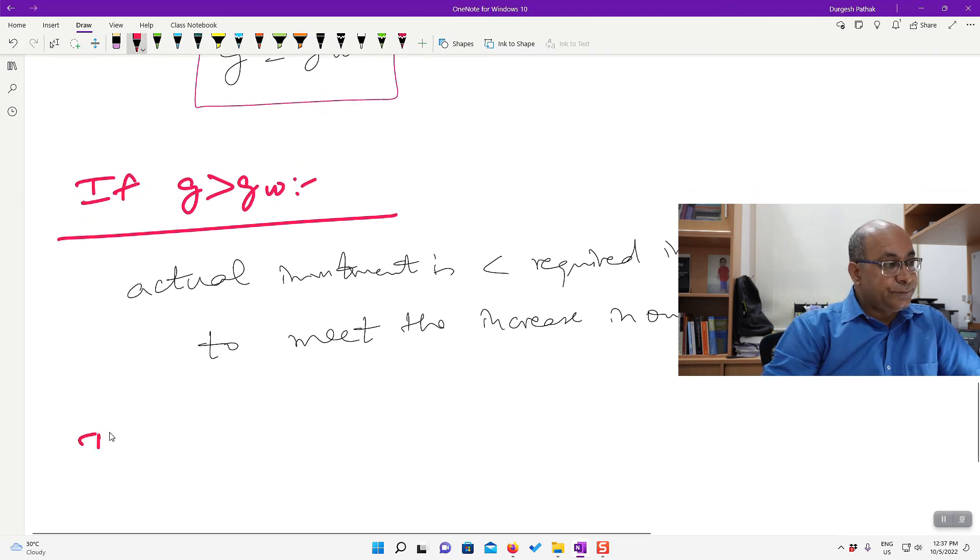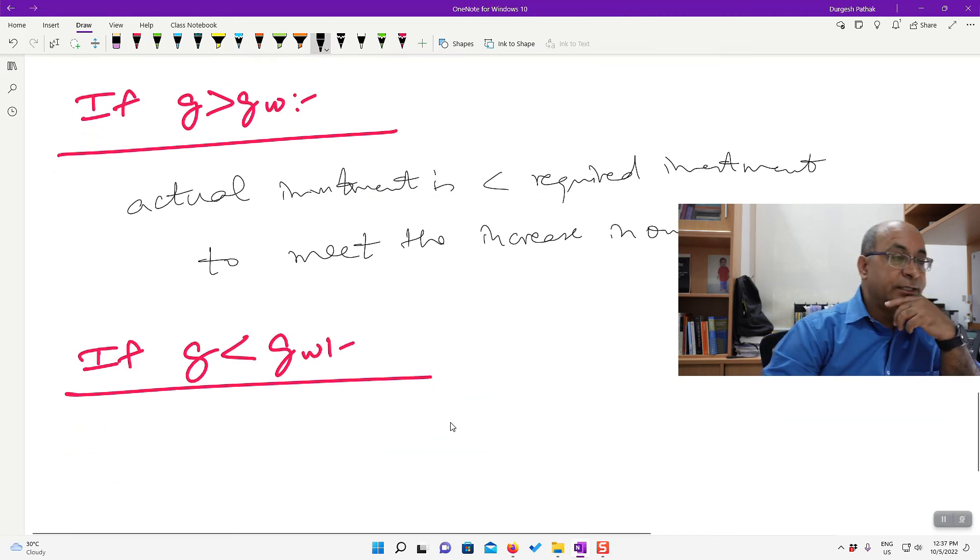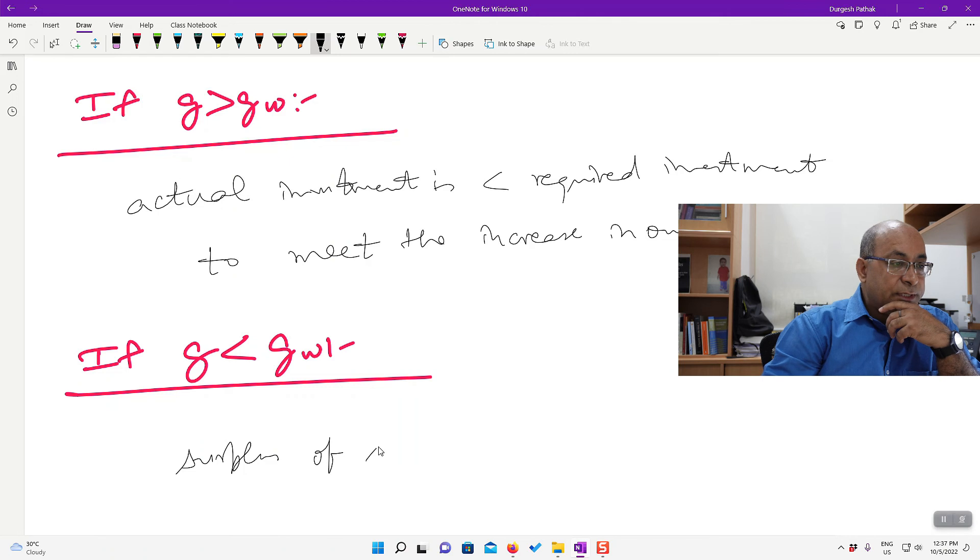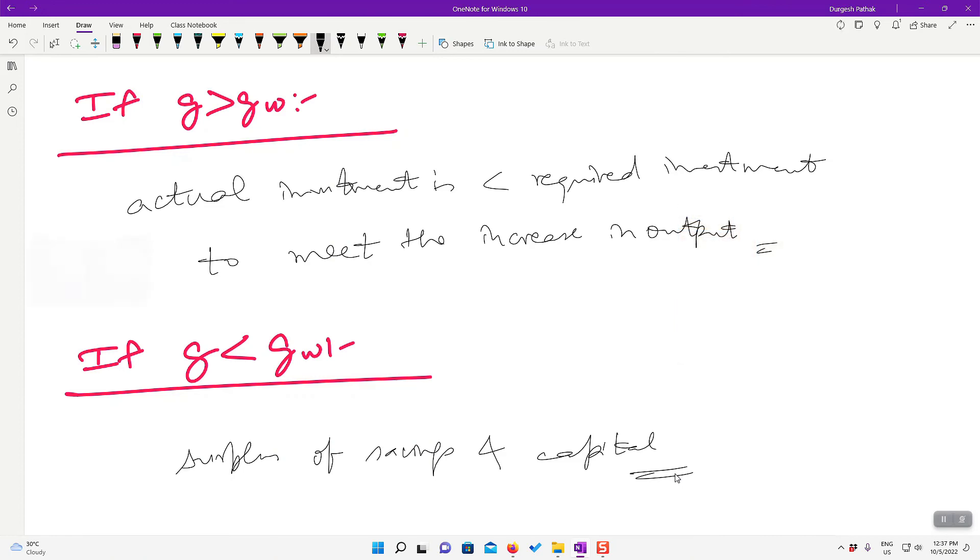What will happen if the converse is there? If G is less than GW, then we have slowed down. The actual rate of growth is much less than what is warranted in the economy. Then I have surplus of savings and capital. The actual investment that is taking place is much less than what the savers are supplying for investment. So it means there is output remaining that is not being totally utilized. We are not producing much because I am not able to finish the past investment, the output. So why should I make any new investment? This will make my capital unutilized.